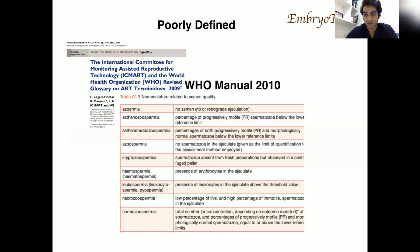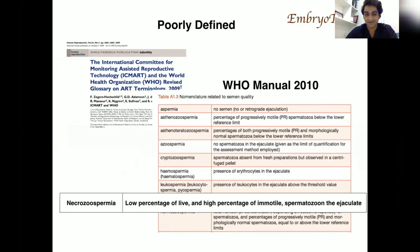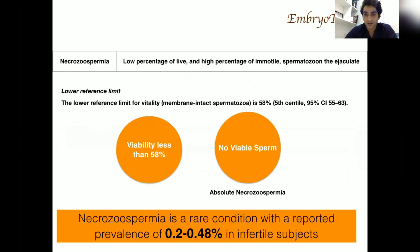The problem with necrozoospermia is that it is poorly defined. Even the international committee for monitoring ART and WHO did not mention anywhere about necrozoospermia. The WHO 2010 manual just says a low percentage of live and high percentage of immotile sperm in the ejaculate is necrozoospermia. Looking at the reference limit for vitality that is 58%, we can say that if viability is less than 58% it is necrozoospermia, and if there is no viability at all then it is absolute necrozoospermia.